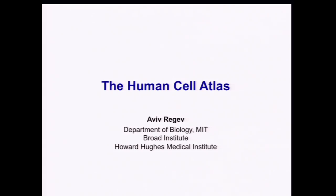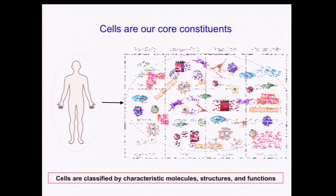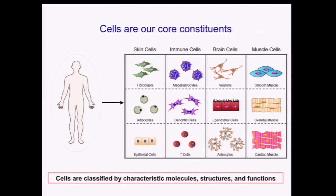Thank you for the opportunity to speak today and to pitch to you the Human Cell Atlas. So why cells? Well, cells are our core units of every one of us, actually of any living organism on earth. Our cells come in many different flavors that we like to classify into different types by different characteristics: their function, their shape, and more recently their molecular profiles. Based on this, for example, we might distinguish in the immune system dendritic cells as a first line of defense from T cells in adaptive immunity. We can distinguish neurons from glial cells like astrocytes and so on.